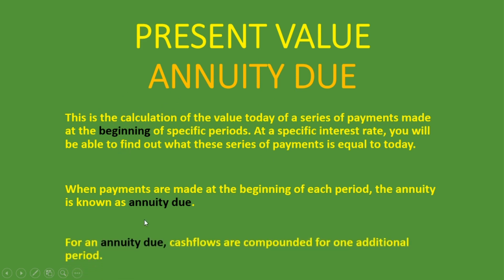For an annuity due, payments being made at the beginning of each period means cash flows are compounded for one additional period. This is as opposed to the ordinary annuity where payments are made at the end of each period. If payments are made at the beginning of each period, that payment has the capacity to earn interest from the beginning to the end. So if I make payments at the beginning and you make payments at the end, mine will have already earned interest for that one period before you start earning interest on yours. That is why with annuity due, it's compounded for one additional period.